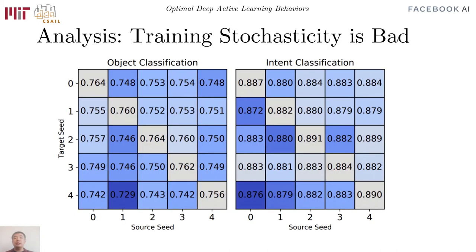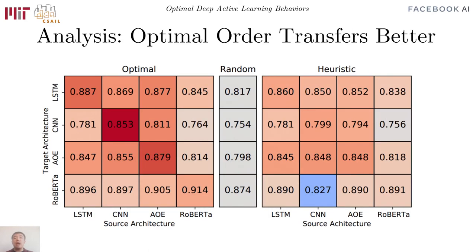In addition, we demonstrated that not controlling for training stochasticity, such as random initialization, is detrimental. The optimal order also transfers across model architectures better than the heuristics.